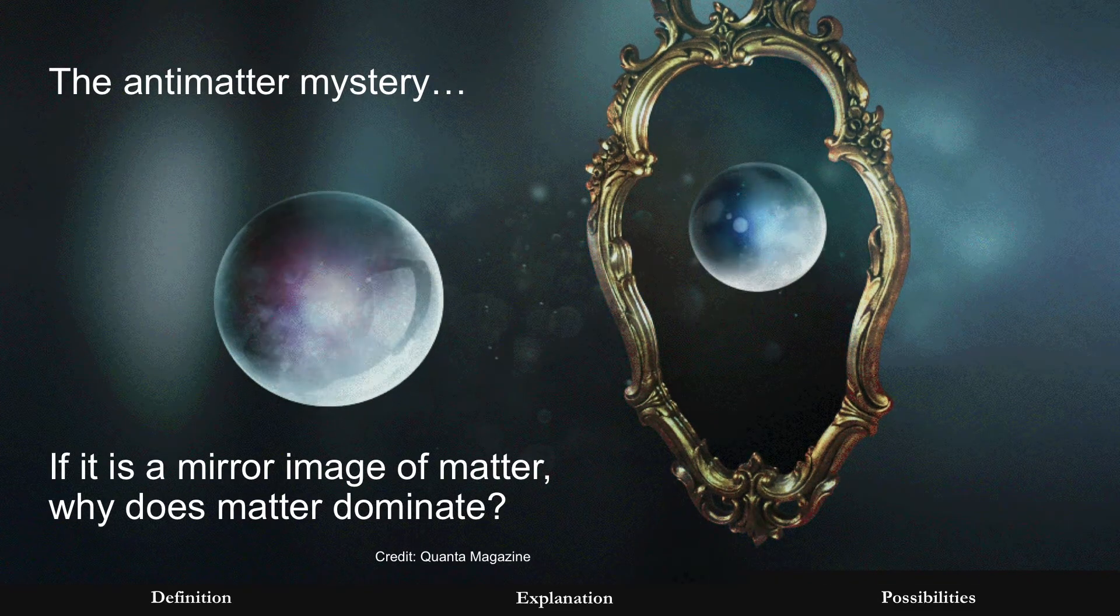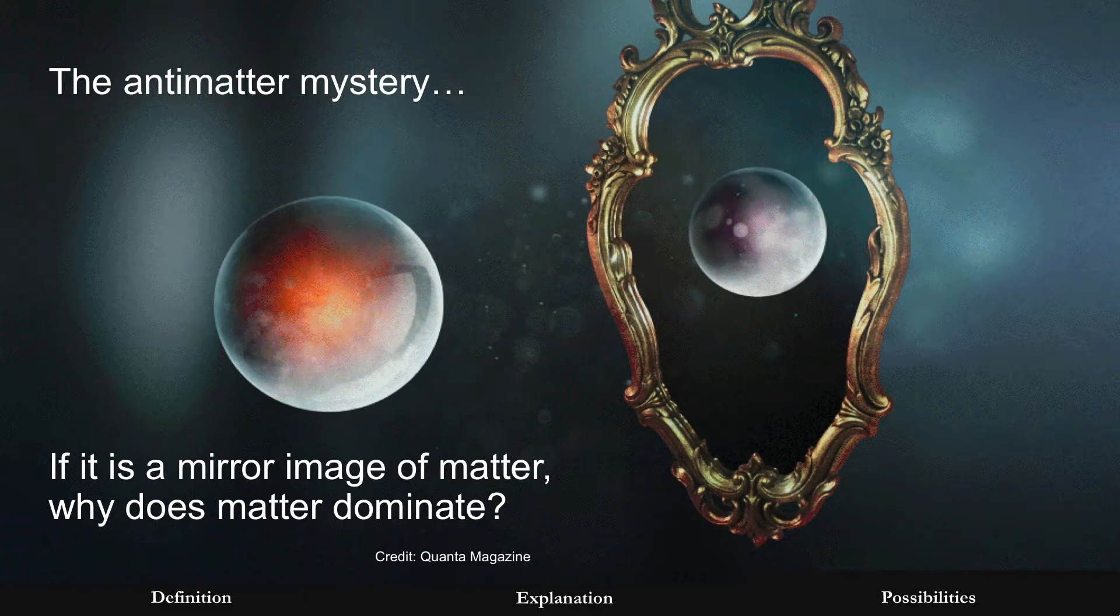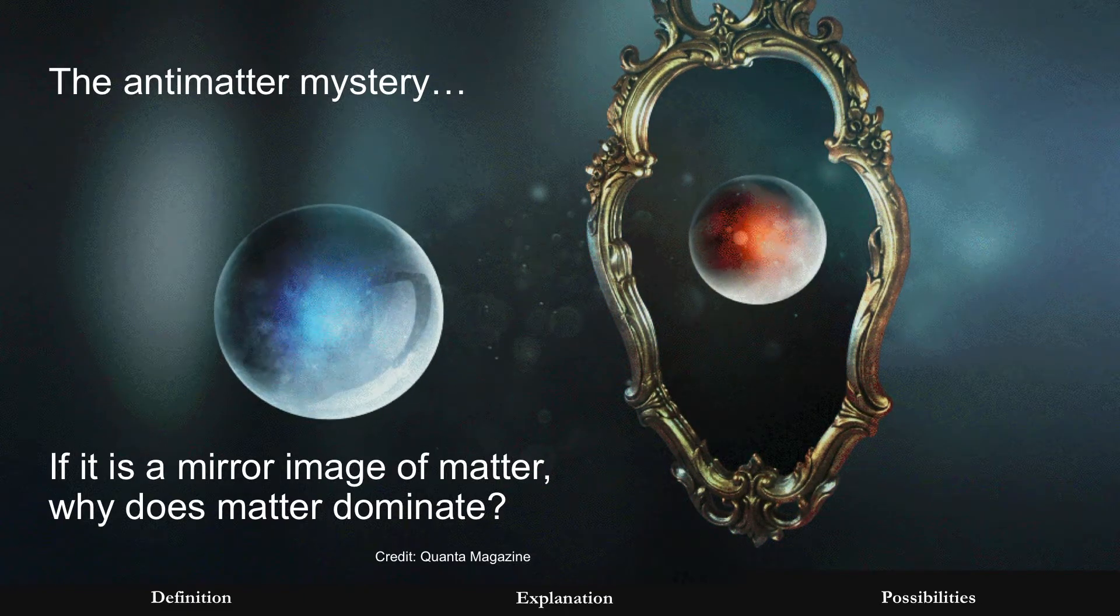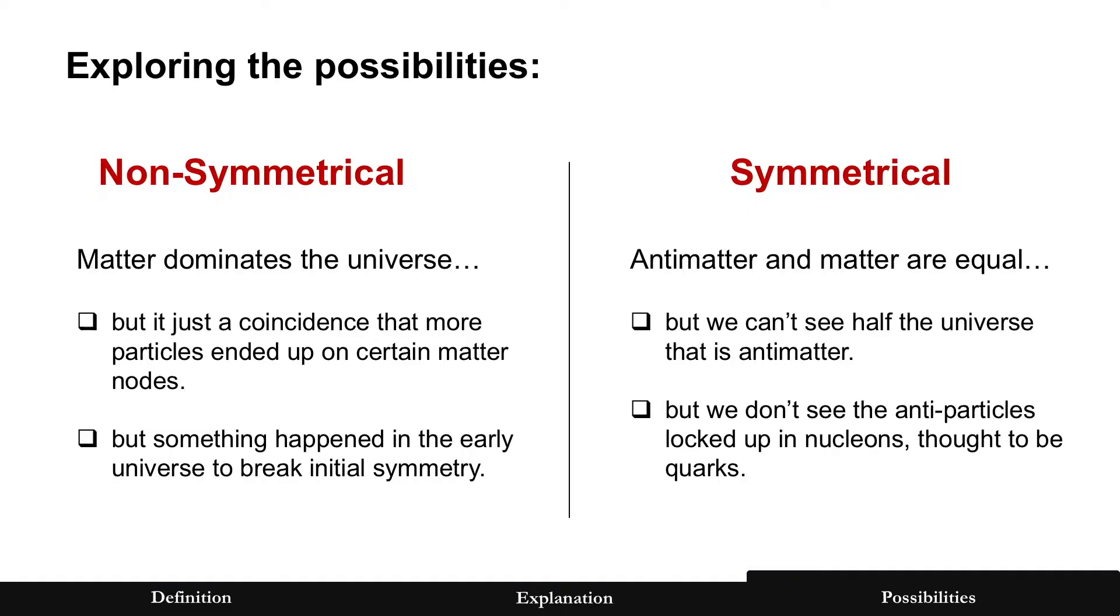But we still have a mystery, right? The antimatter mystery is why does matter dominate the universe? Well, let's take a look at some possibilities. We assume it's non-symmetrical, and that matter dominates the universe. Alright, so maybe it's just a coincidence. Particles ended up on those particular nodes.